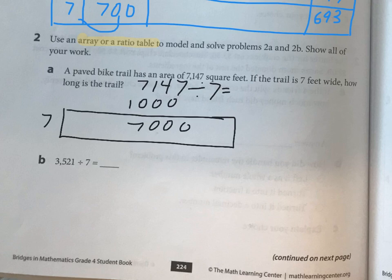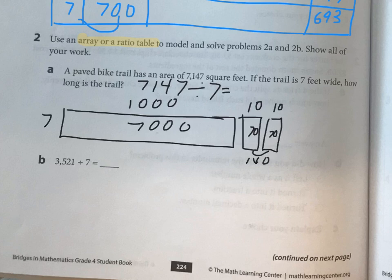I'm going to make some smaller rectangles to get myself up to 7147. What if I did 10? That would give me 70, and then there's another 70, and that's giving you 140. So I'm already up to 7140 and I only need 7 more.